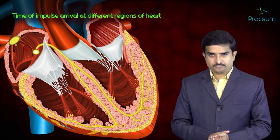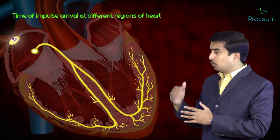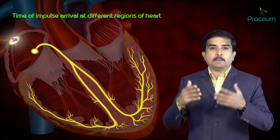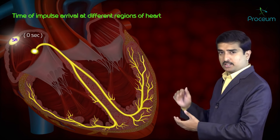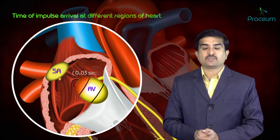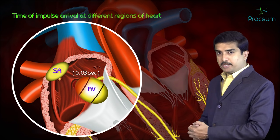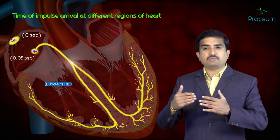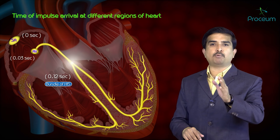Now let us discuss the time of impulse arrival at different regions of the heart. Once generated in the SA node, the impulse takes 0 seconds to spread through the SA node itself. The action potential reaches the initial part of the AV node at 0.03 seconds. Conduction velocity then slows as the impulse travels through the three parts of the AV node, and it reaches the bundle of His at 0.12 seconds.